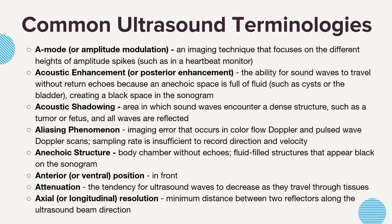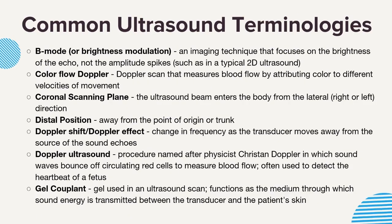Anterior or ventral position means in the front. Attenuation is the tendency for ultrasound waves to decrease as they travel through tissue. Axial or longitudinal resolution is the minimum distance between two reflectors along the ultrasound beam direction. B-mode, or brightness modulation, is an imaging technique that focuses on the brightness of the echo rather than the amplitude spikes, as in a typical 2D ultrasound. Color flow Doppler is a Doppler scan that measures blood flow by attributing color to different velocities of movement. Coronal scanning plane is where the ultrasound beam enters the body from the lateral side — either right or left.